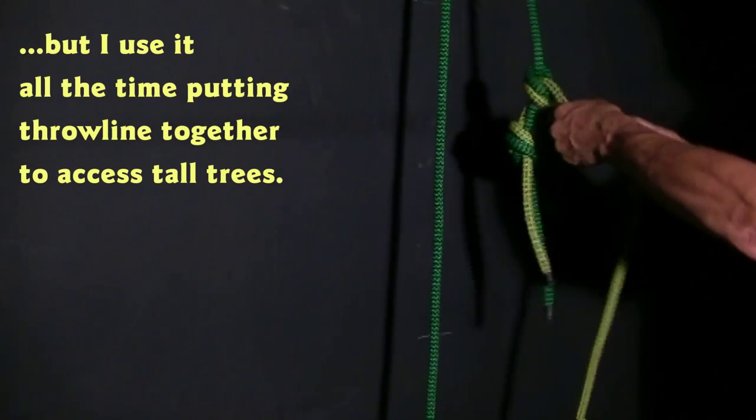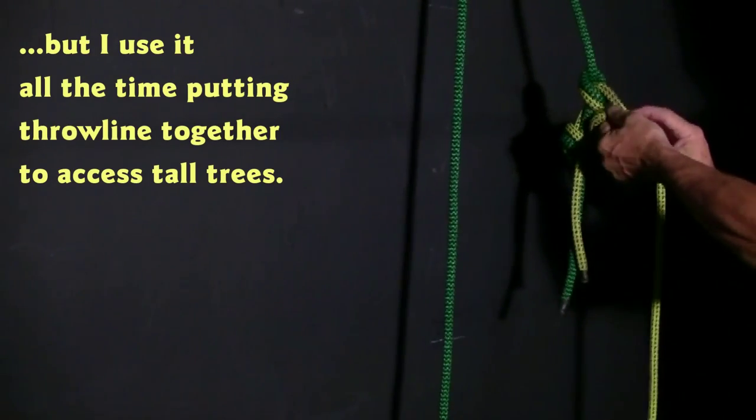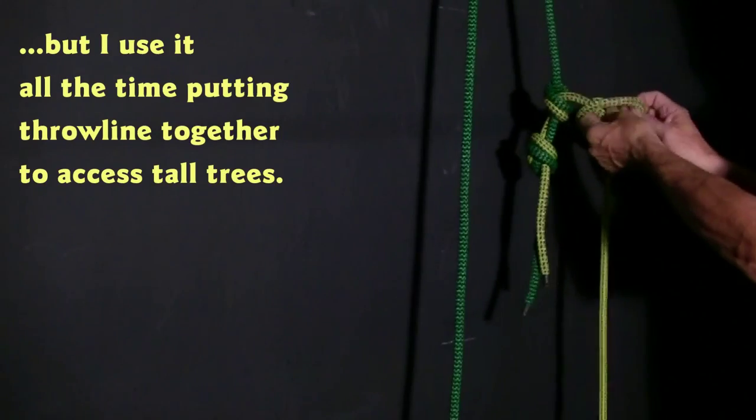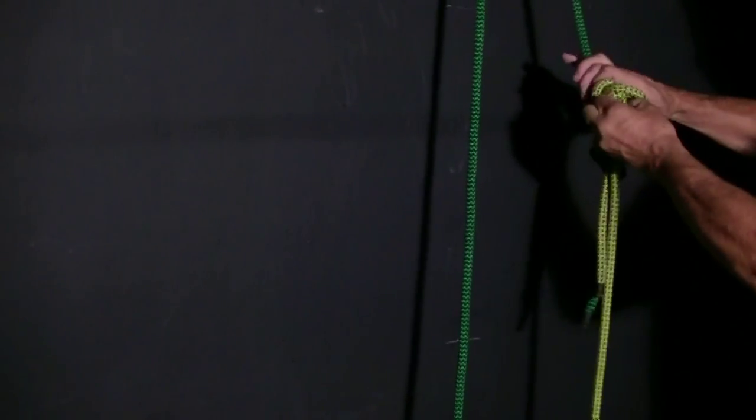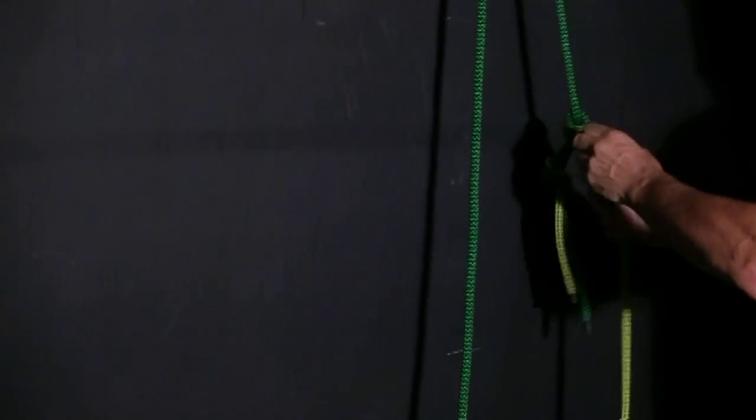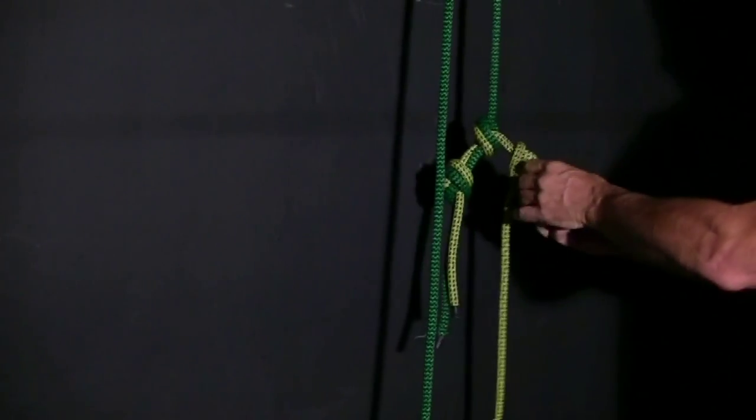You can still do an alpine butterfly just below the knot for a place to tie off your carabiner. It makes a great place to tie off when you're passing the knot.